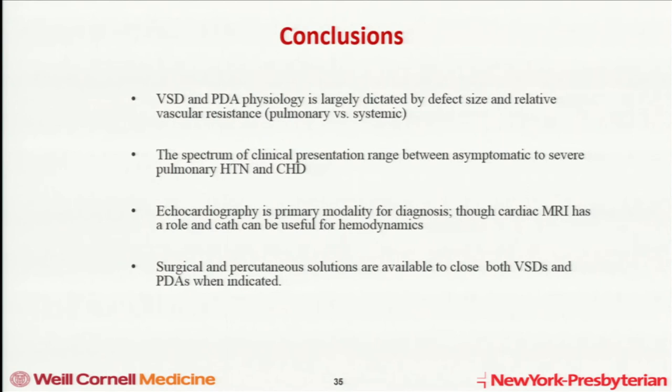In conclusion, VSD and PDA physiology is largely dictated by defect size and relative vascular resistance. The spectrum of clinical presentations ranges depending on anatomy and physiology — from asymptomatic all the way to severe pulmonary hypertension. Echo is the primary diagnostic modality, with utility for MRI and cath in measuring hemodynamics. Surgery for all types of VSDs and PDA is an excellent option, and percutaneous solutions are available for PDAs and muscular VSDs when closure is indicated.